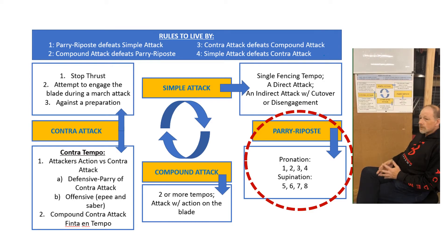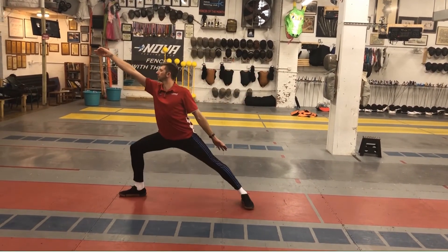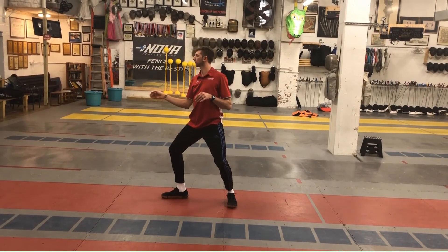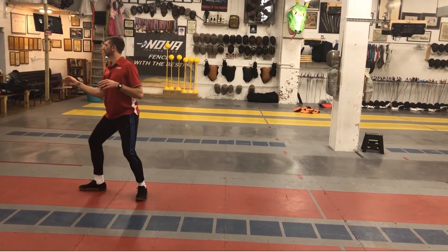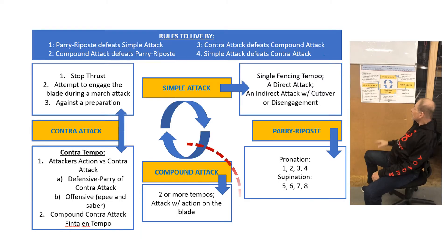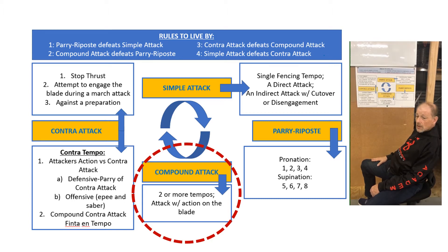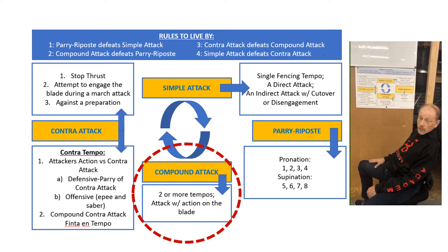Now we go into compound attacks. Coach Jeff will demonstrate various compound attacks: an advanced lunge, a balestro, a double advanced lunge, and an advanced half-advanced lunge. Compound attacks also include actions on the blade, such as a beat attack or an oppositional action in epee. Those are all compound actions — they require more than one tempo to complete.